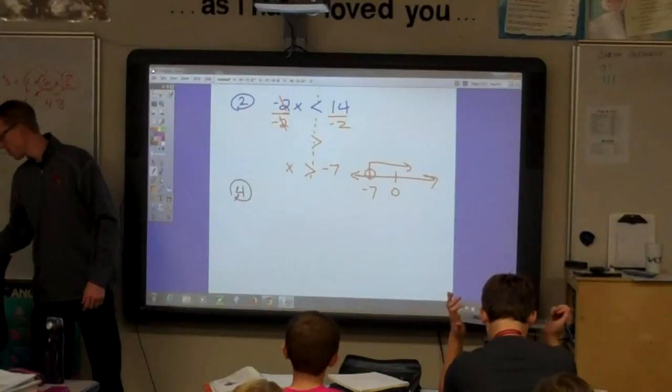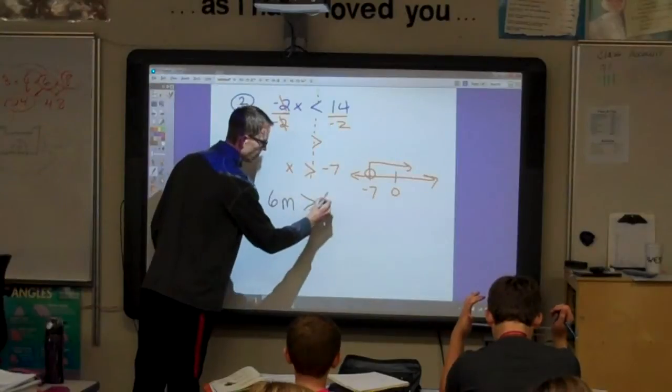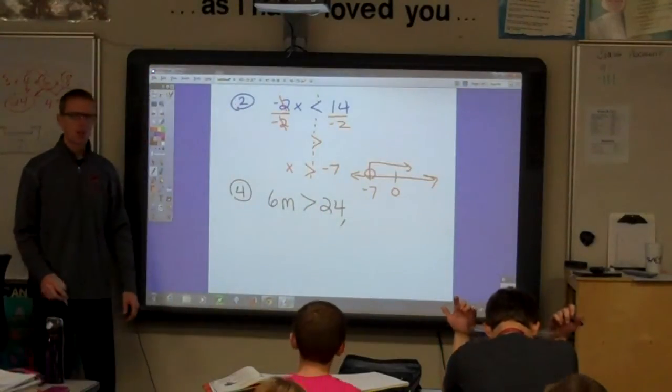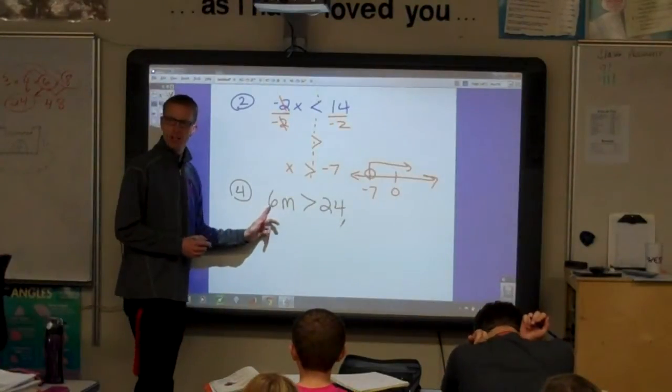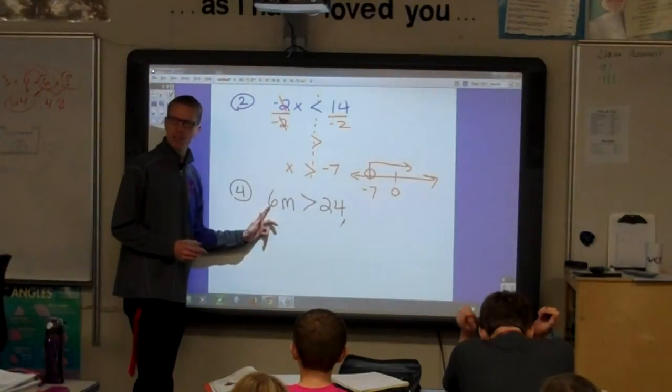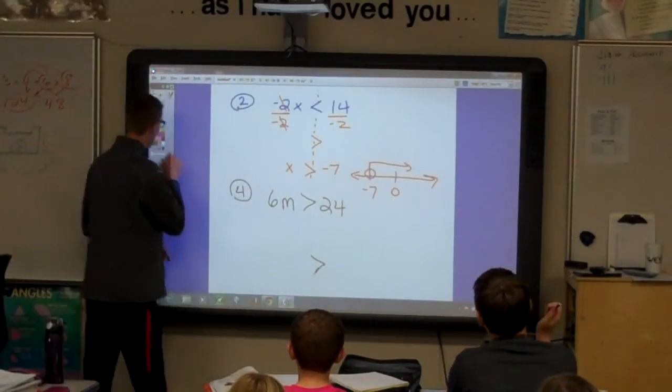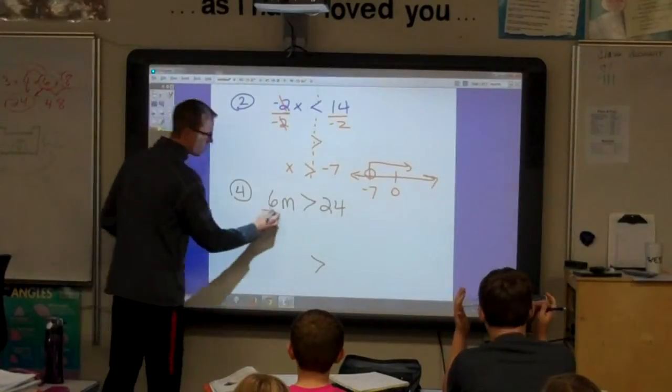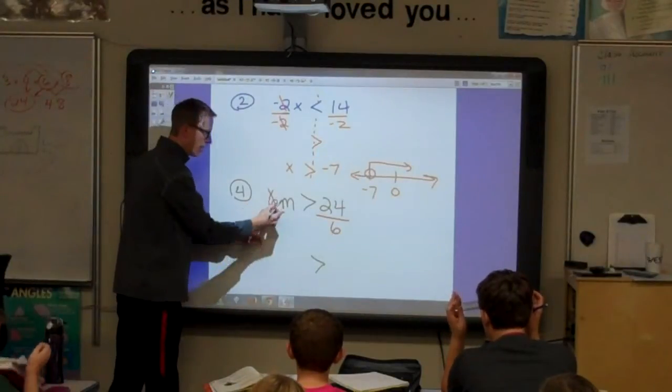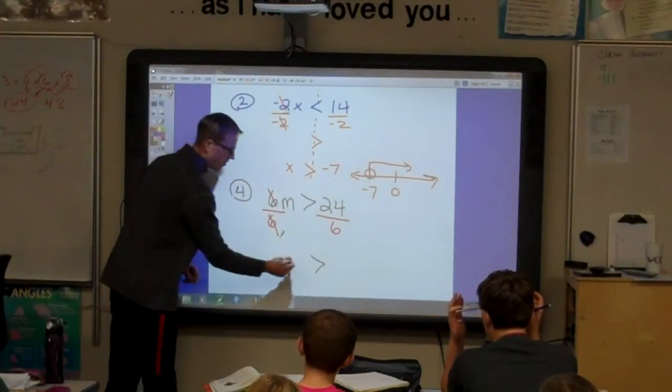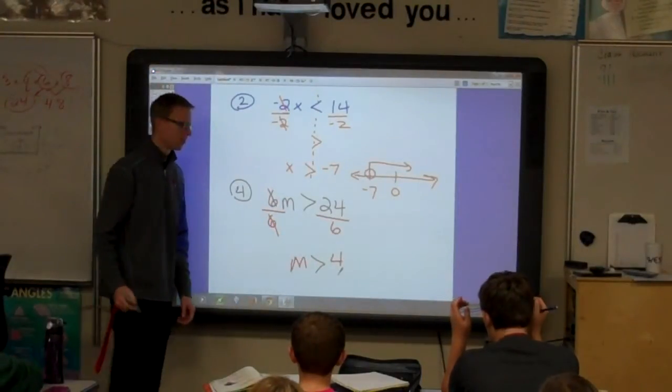Number 4. Number 4 is 6m is greater than 24. What's the coefficient? Lydia? 6. Positive 6, right? Do we need to reverse the sign? No. Nope. It's going to stay as a greater than sign. To solve it, divide by 6 on both sides. 6 over 6 is 1. So, m is greater than 4.